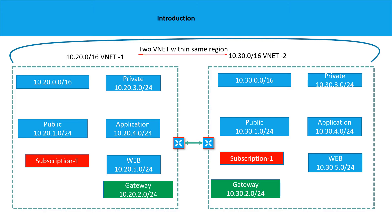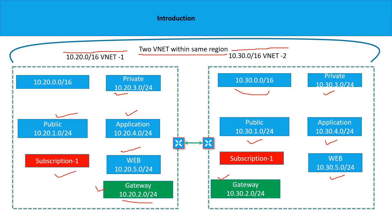I have two vNets in the same region. My first container is 10.20.0.0/16 which is vNet1, and my second container is 10.30.0.0/16 which is vNet2. I have chosen a couple of subnets: my private subnet starts with 10.20.3.0, application 4.0, web 5.0, and public 1.0. I'm part of the same subscription. For vNet2, the IP addressing follows the same pattern: private starts with 10.30.3.0, public 30.1, application 30.4, web 5.0, and I have taken two gateway subnets — 10.20.2.0 and 10.30.2.0.